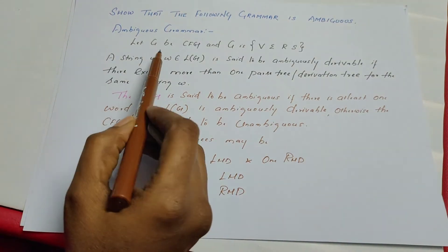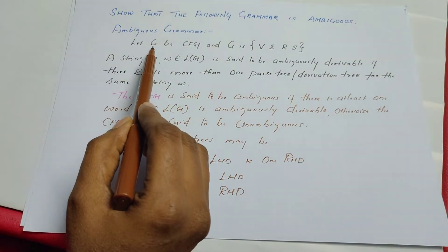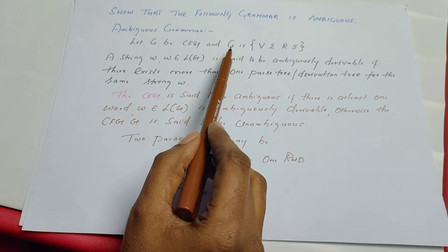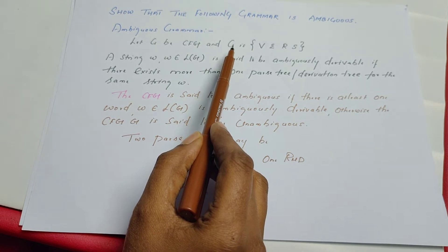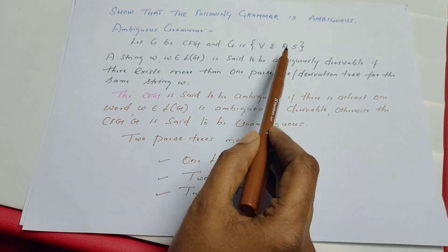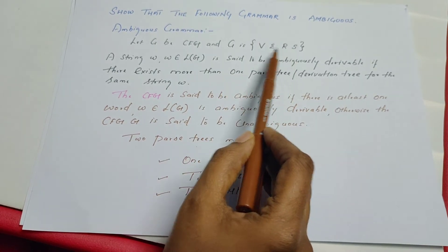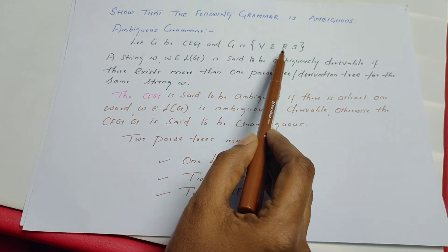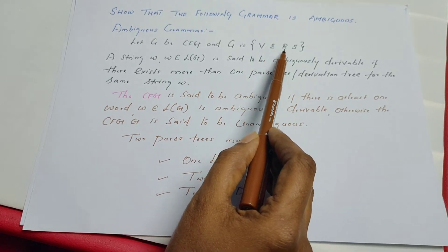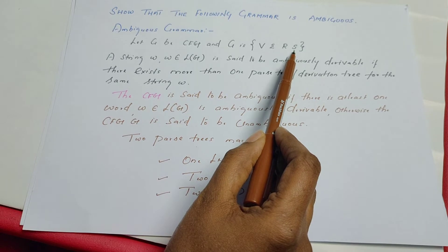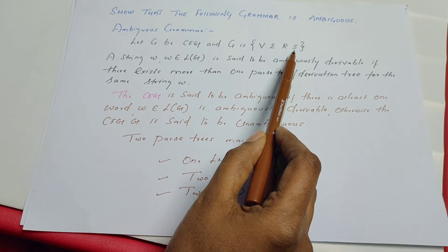Let G be the context-free grammar. In general, we know that G can be defined by four tuples: V, sigma, R, S. Where V is a set of variables, sigma is a set of terminals, R is a set of production rules, and S is a start symbol. Of course, S is also a variable.